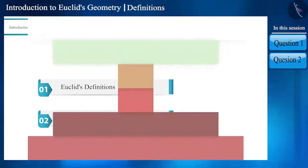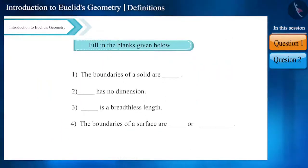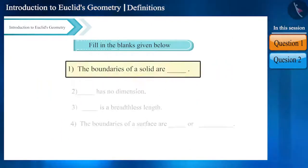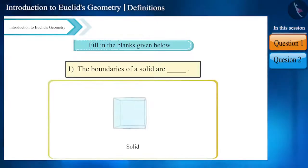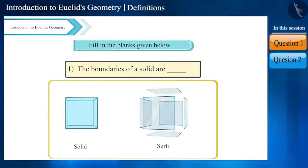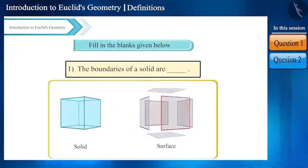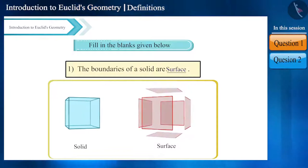Let's start with the first question. Fill in these blanks. Look at the first blank. Here, we are talking about the boundaries of a solid. And the boundaries of a solid is a surface. Hence, the answer is surface.